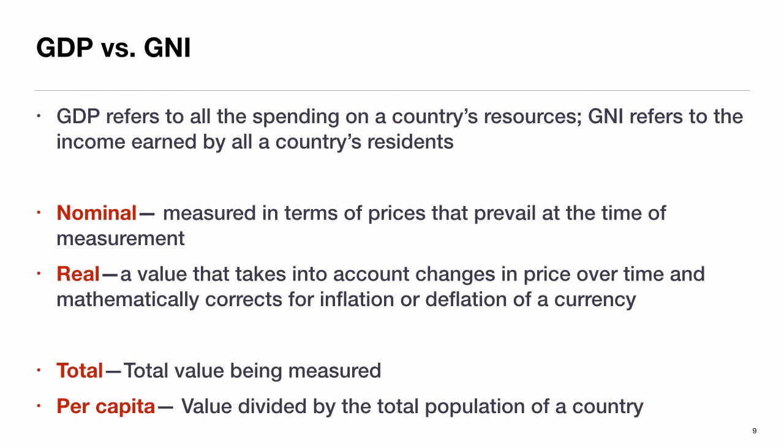You will also see GDP and GNI reported as total GDP/GNI or per capita GDP/GNI. The per capita value divides the total amount by the entire population of the country. Using India as an example, the per capita GNI of India might be relatively low even though their total GNI is quite high, since they have over 1 billion workers. So when comparing between countries, it's very important to look at per capita GDP and GNI, or else the comparisons become very tricky.